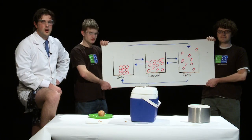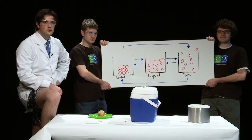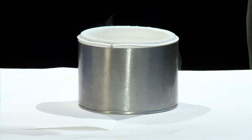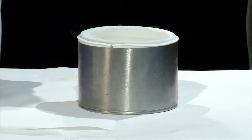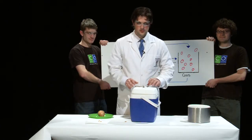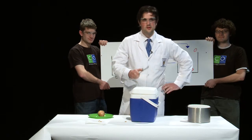But now it's chemistry trivia time! The temperature of liquid nitrogen — why that's minus 196 degrees centigrade. Dry ice — that's a relatively tropical minus 78 degrees centigrade.